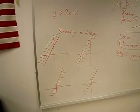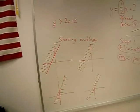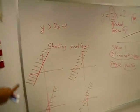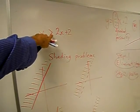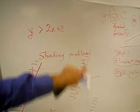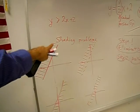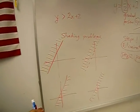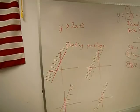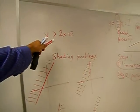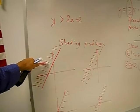We definitely need the shading problem. That's for sure. Look at this fabulous shading problem. We've got y greater than 2x plus 2. We can probably get rid of two of them. What do you think? Which one has more ink?